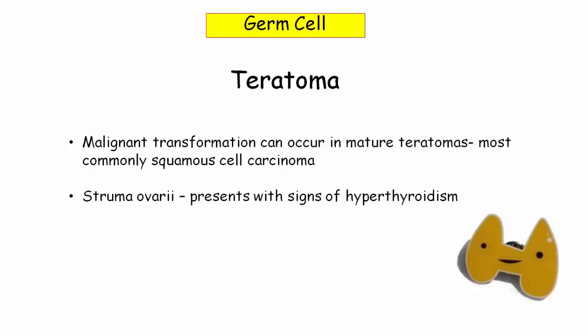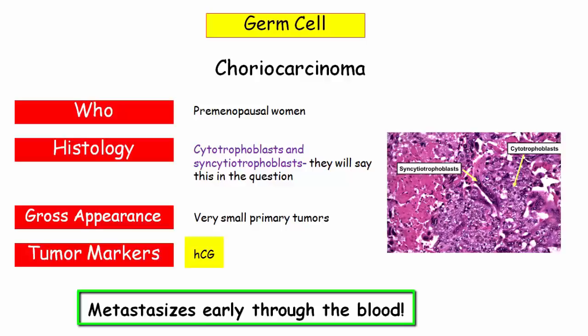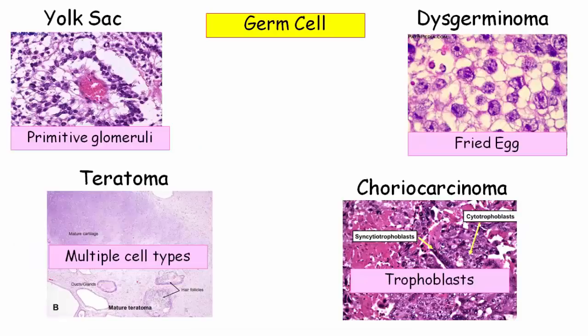The last germ cell tumor is choriocarcinoma — there is also embryonal carcinoma, but this is very rare with very few distinguishing features. Choriocarcinoma stems from placental-like tissue and will contain syncytiotrophoblasts and cytotrophoblasts on image or in the question stem. Because the placenta secretes HCG, choriocarcinoma does too, and this is used as a tumor marker. Because these cells are programmed to invade blood vessels, they are often very small tumors that metastasize through the blood early. For germ cell tumor buzzwords: yolk sac — primitive glomeruli; dysgerminoma — fried egg; teratoma — multiple cell types; choriocarcinoma — trophoblasts.